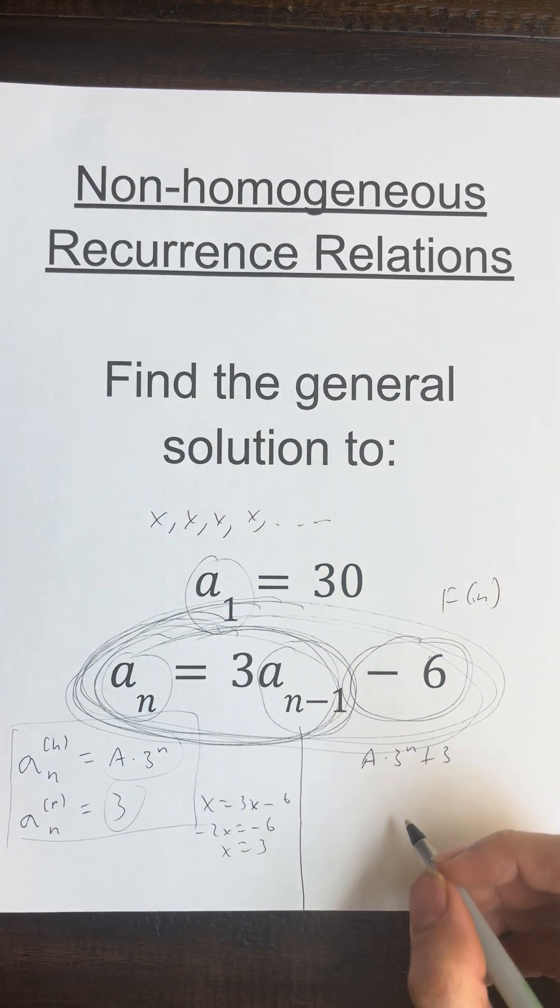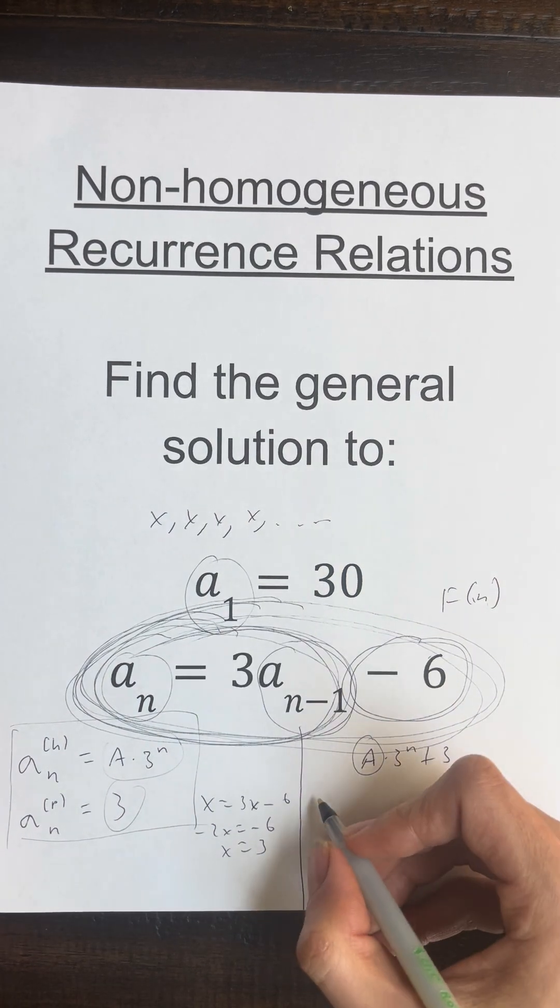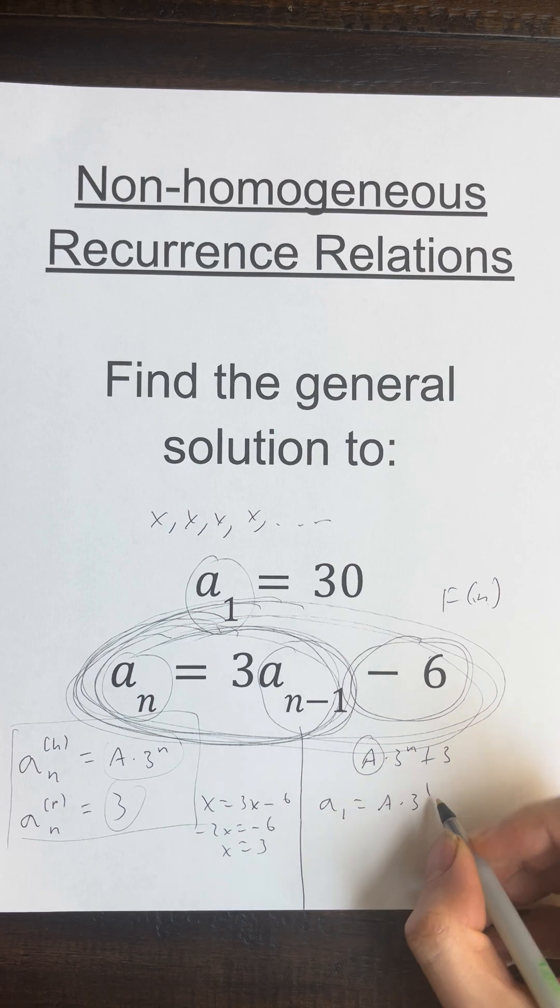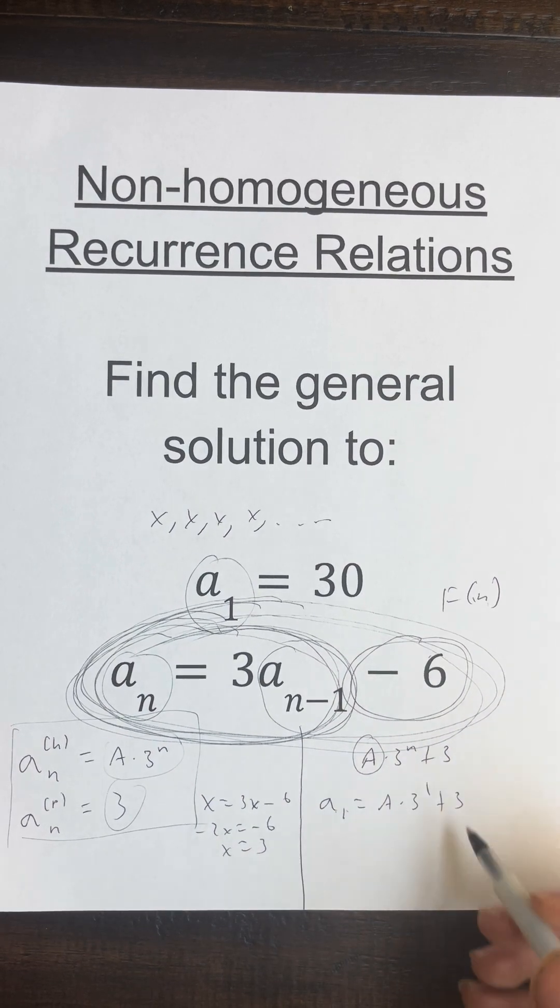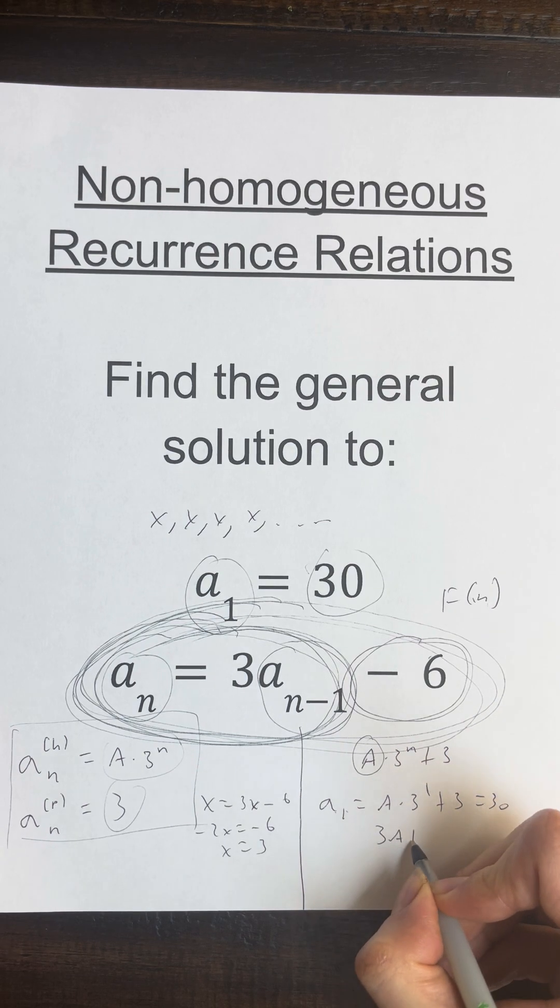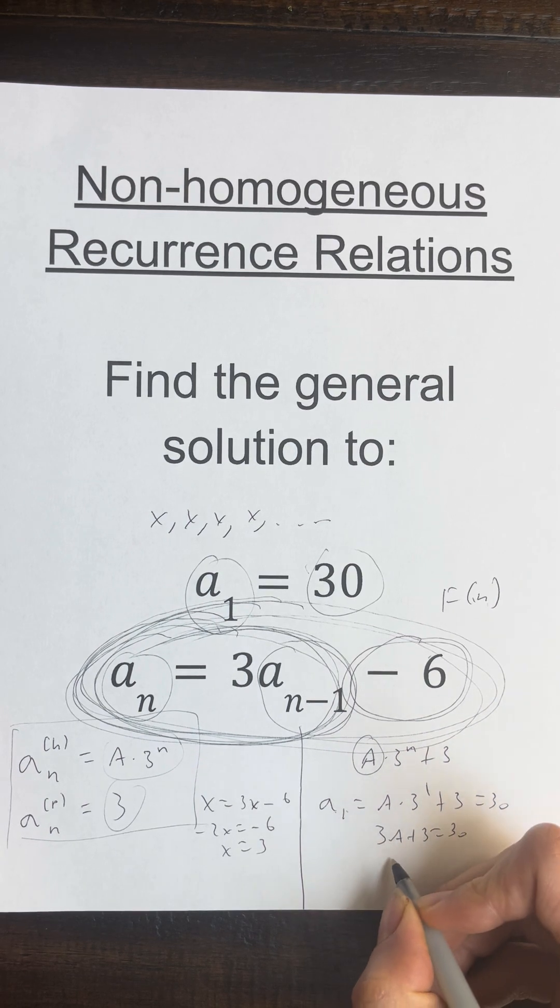And if we know a₁, then we can figure this out. So a₁ is equal to a times 3 to the power of 1 plus 3, and a₁ is 30. So 3a plus 3 is equal to 30, which gives a is 9.